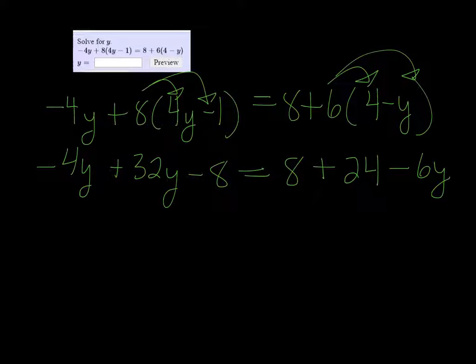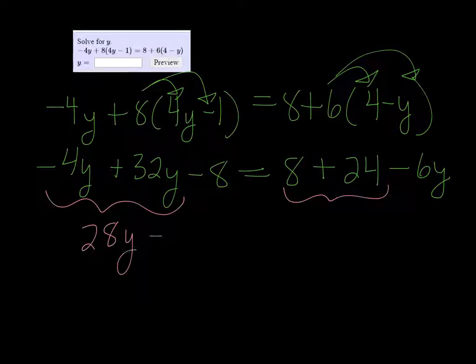Here you want to combine all the like terms. We can put the y's together on the left, the 8 and the 24 together on the right. So I get 28y - 8 = 32 - 6y.